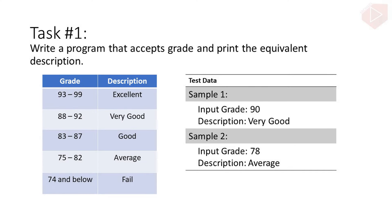For our first exercise, let's write a program that accepts a grade and prints the equivalent description. Here is the range and their equivalent description. The program will print 'excellent' if the grade is greater than or equal to 94 and less than or equal to 99.